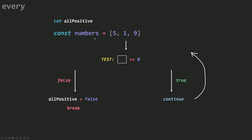Now let's say we have an array of numbers that are all positive. If we check five — five passes the test, true, continue. Then one — one also passes the test, continue. Then nine — nine also passes the test, and now all my numbers pass the test. So allPositive must be true, but we didn't set allPositive to true anywhere in our code. What we need to do is initially set allPositive to true. All positive will remain true if all elements pass the test and will be false if just one number doesn't pass.